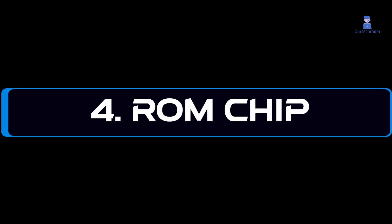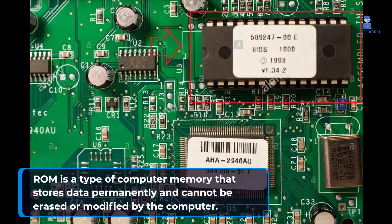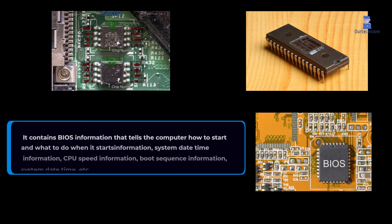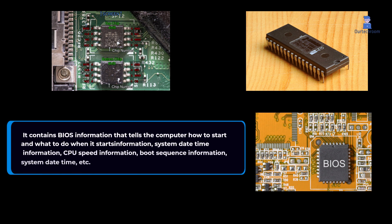4. ROM Chip. ROM is a type of computer memory that stores data permanently and cannot be erased or modified by the computer. It contains BIOS information that tells the computer how to start and what to do when it starts, system date-time information, CPU speed information, boot sequence information, etc.